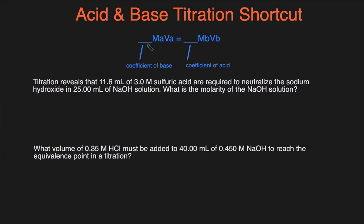So the shortcut is here. This is the equation that you would use. It's the coefficient of the base times the molarity of the acid times the volume of the acid equals the coefficient of the acid times the molarity of the base and the volume of the base. Looks like a lot, but it'll make a lot more sense when we take a look at some examples.